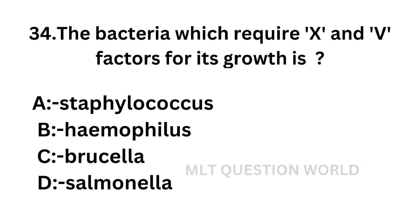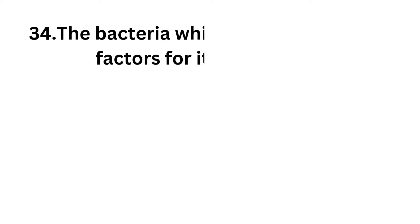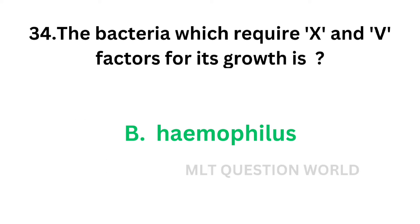Question number 34: The bacteria which requires factor 10 and factor 5 for its growth — option A: Staphylococcus, option B: Haemophilus, option C: Brucella, option D: Salmonella. Which of the following bacteria requires factor 10 and 5 for their growth? The correct answer is option B, Haemophilus. Haemophilus influenzae requires factor 10 and 5 for their growth.